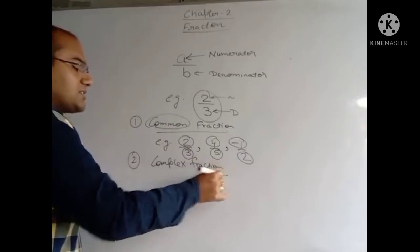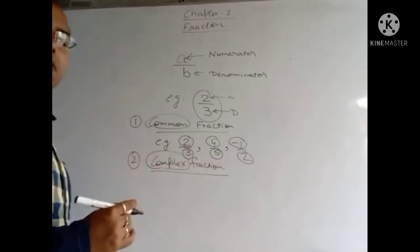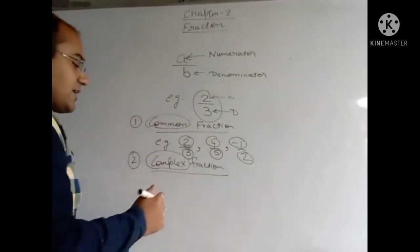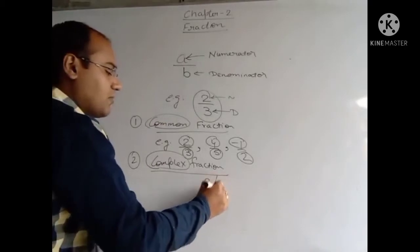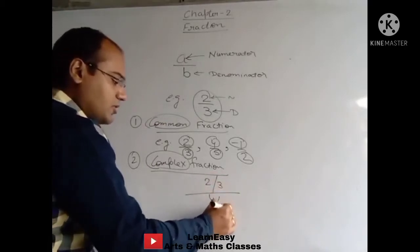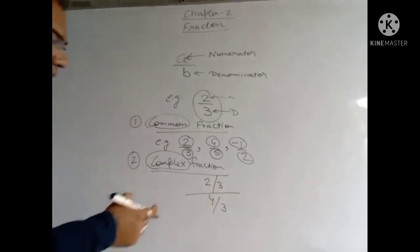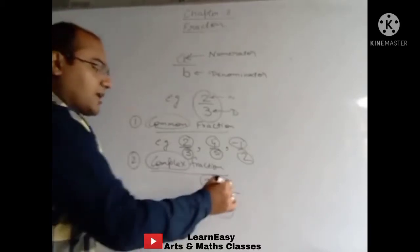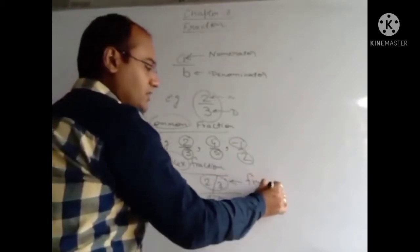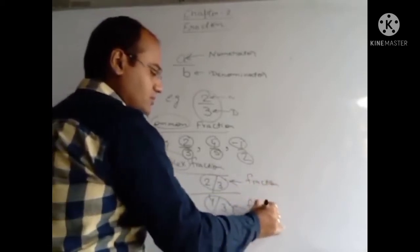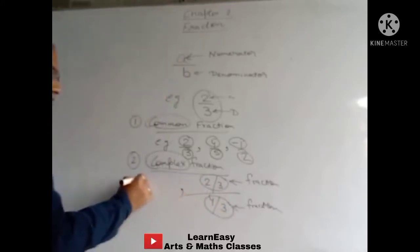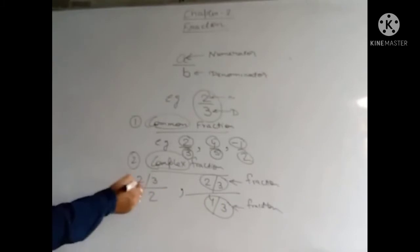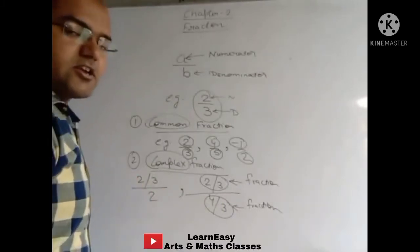The second type of Fractions is Complex Fractions. Complex means looking a little bit different from the common ones. As an example, consider 2 upon 3, divided by 4 upon 3. Here in the numerator as well as in the denominator, both are fractions. Another example: the numerator is a fraction and the denominator is an integer. Such types of Fractions are known as Complex Fractions.